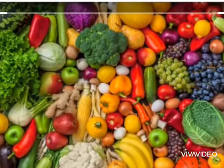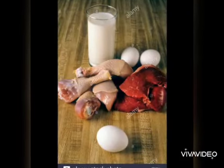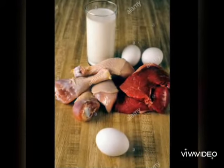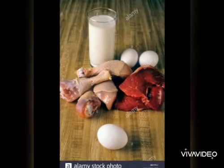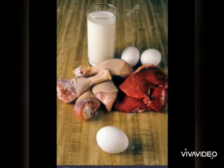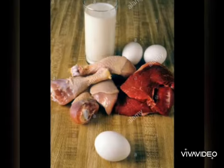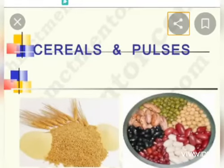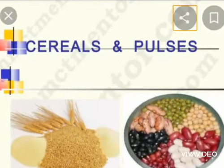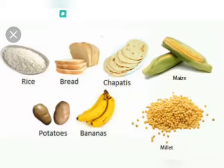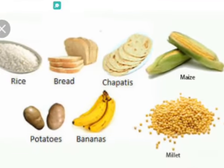We need food to live and grow. It makes us healthy and strong and gives us energy. We eat many things — rice, bread, pulses, and vegetables. We eat fruits. Some people eat eggs, meat, and fish. Where does food come from? Vegetables, fruits, pulses, and cereals come from plants. Milk, eggs, and meat come from animals.